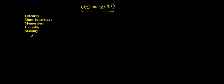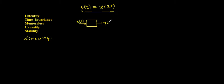We will start with the first property: linearity. To understand that, we first try to understand the nature of the system. I will consider the input x(t) and get the output y(t) = x(2t). So the system operator h works such that wherever it finds t, it replaces it with 2t. Whatever you feed in as input, it replaces t with 2t and gives you the output.